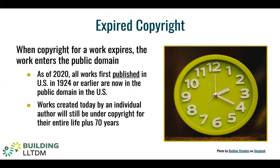That said, note that unpublished works created before 1924 could still be protected by copyright. Under today's copyright laws, works created by an individual author today won't enter the public domain until 70 years after that author's death. But when copyright does expire, the work is in the public domain and there are no copyright restrictions. For example, the book Alice in Wonderland is in the public domain, as are New York Times articles from the 1910s, because their term has expired. This means anyone may do anything they want with the works, including activities that were formerly the exclusive right of the copyright holder, like making copies and selling them.